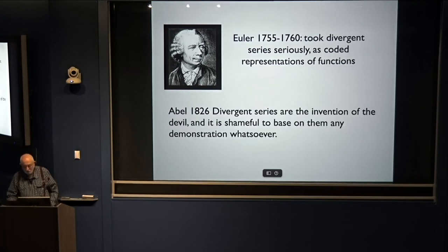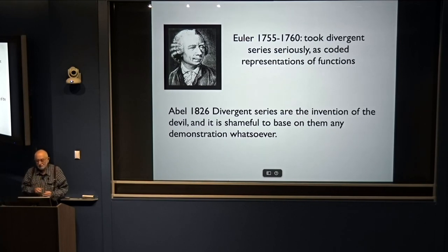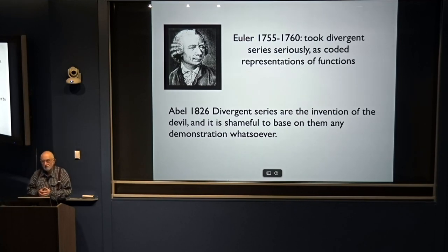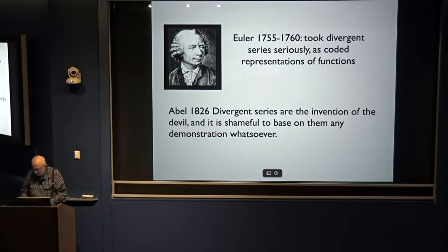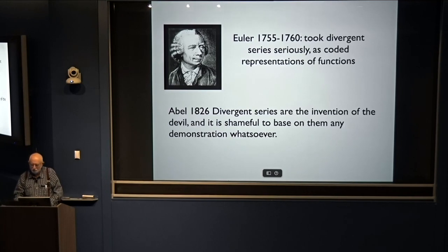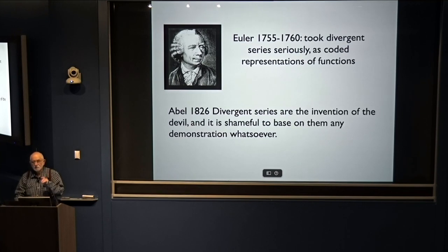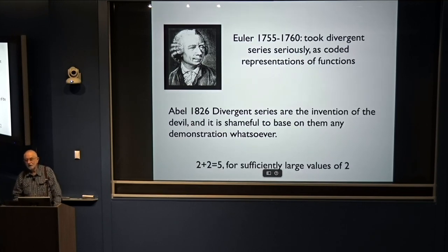But it wasn't always the case. Abel in 1826 wrote: 'Divergent series are the invention of the devil, and it is shameful to base on them any demonstration whatsoever.' And then to descend to the ridiculous, there's this mythical graffito on a wall in a men's room in Princeton: 'Two plus two equals five for sufficiently large values of two.'